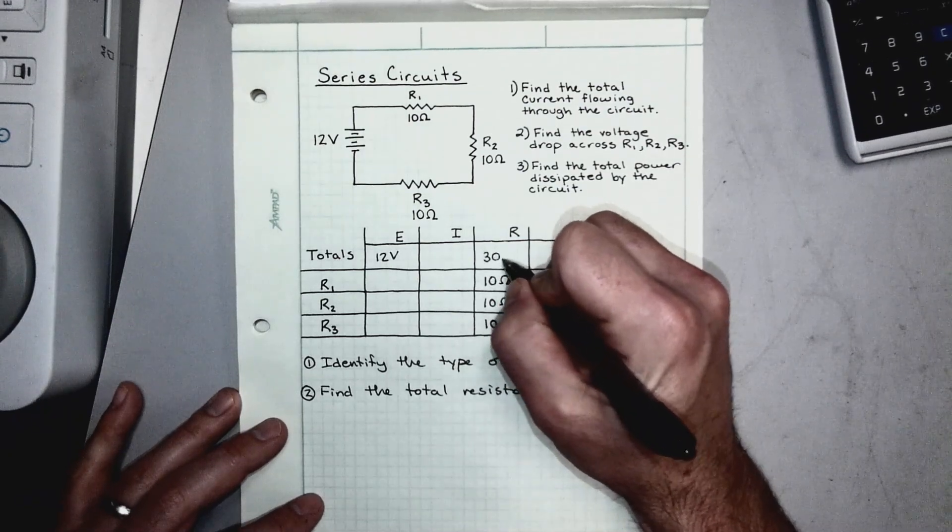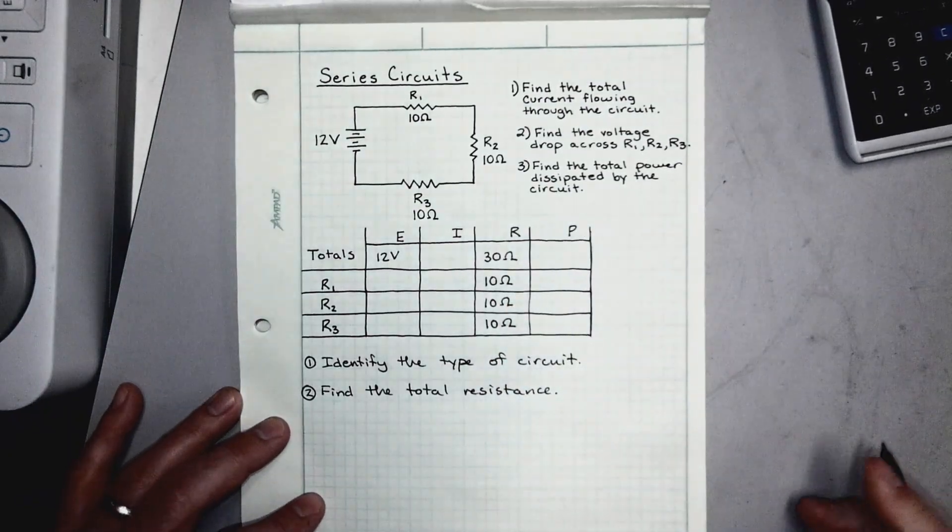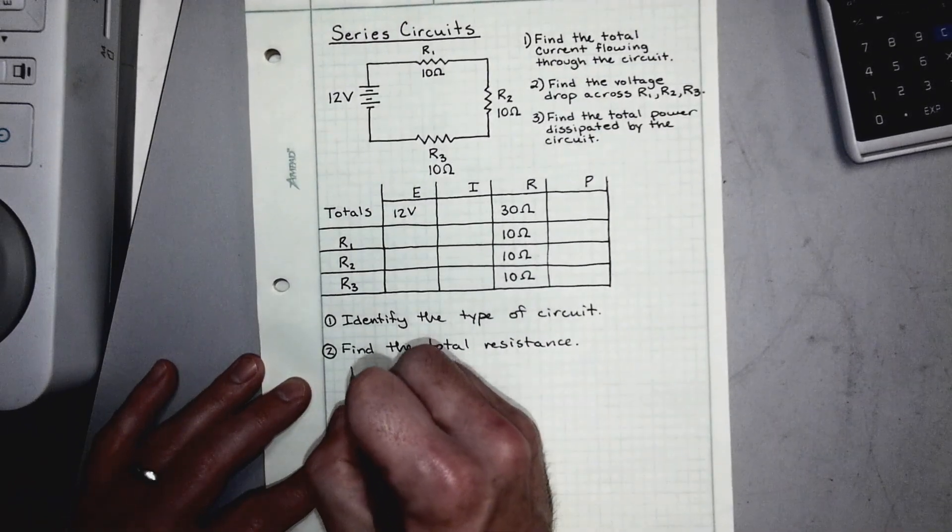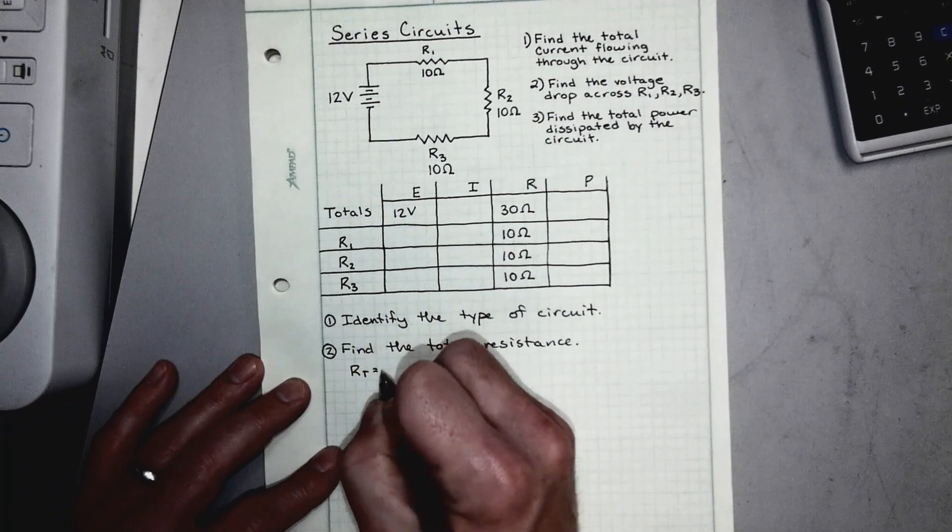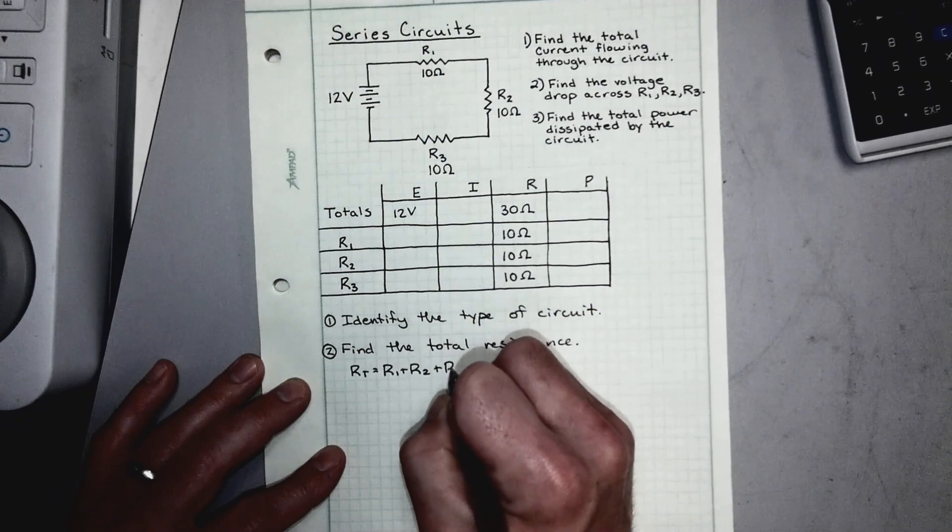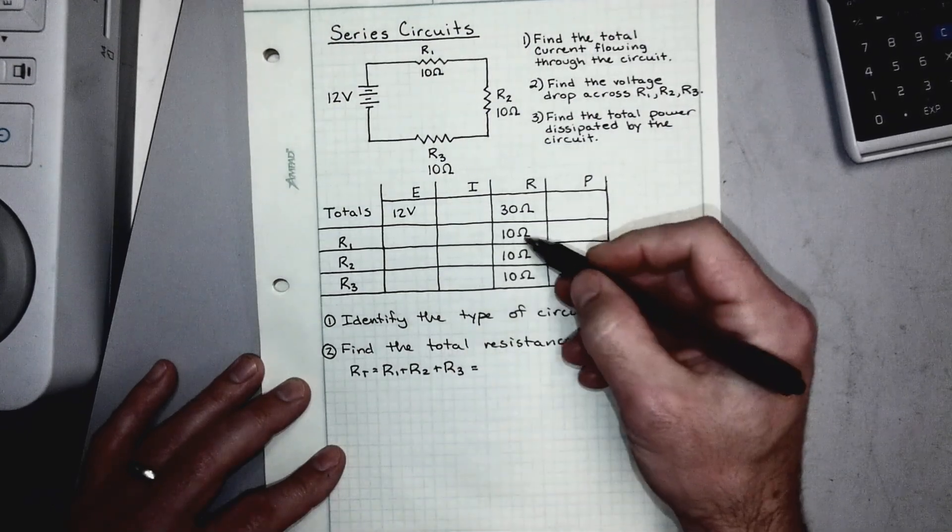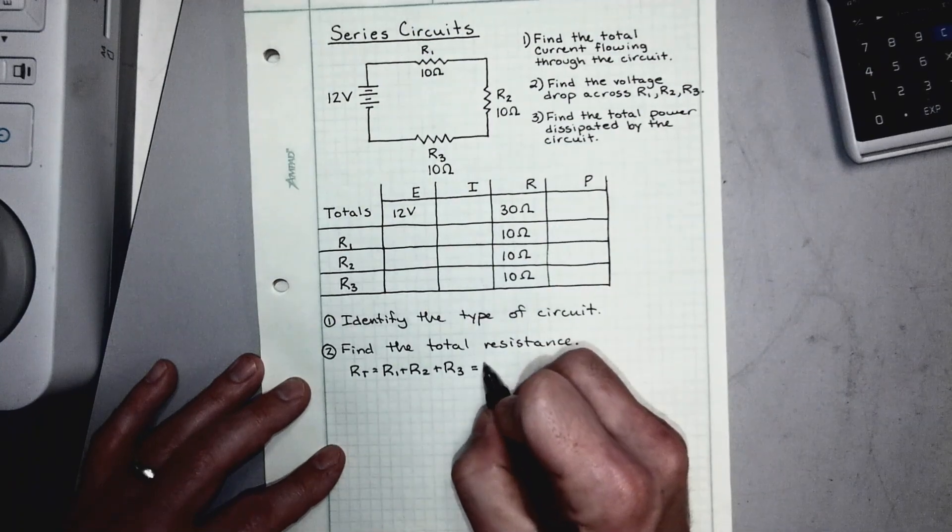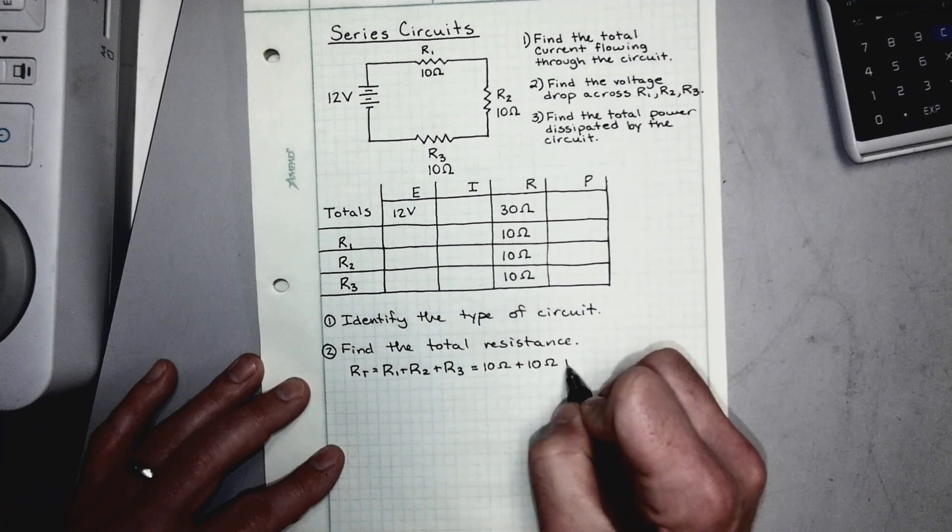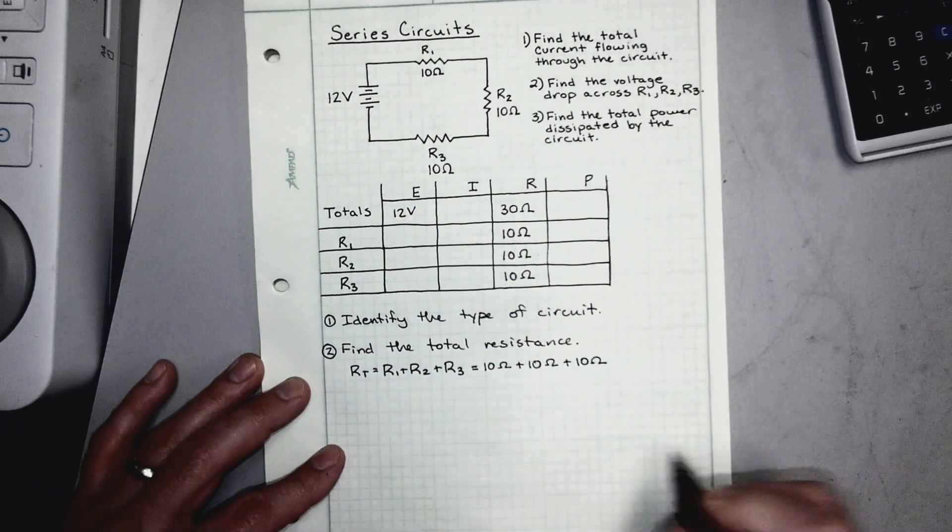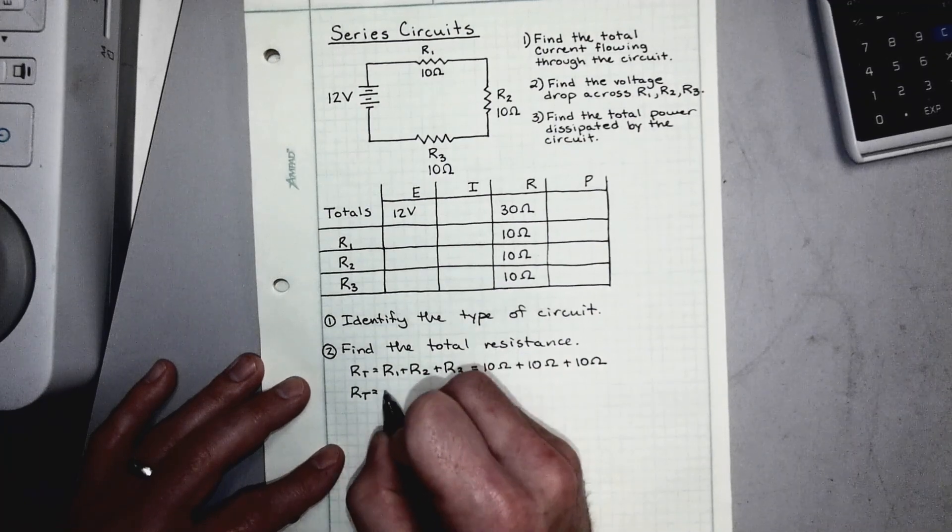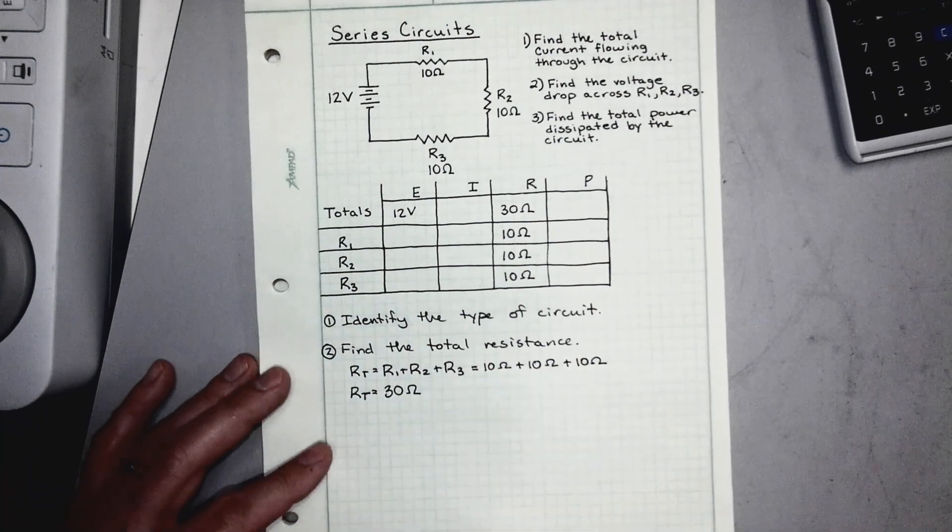We see that total resistance is 30 ohms, and that's pretty easy. So if we were to write an equation for this, find the total resistance, we would have said rt equals r1 plus r2 plus r3. That equals, now we plug in all of our values, 10 ohms plus 10 ohms plus 10 ohms, and that is going to get us to a total rt or a resistance total of 30 ohms. Pretty simple, right?